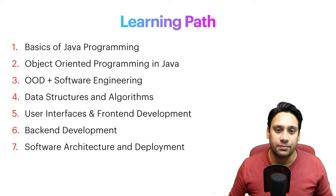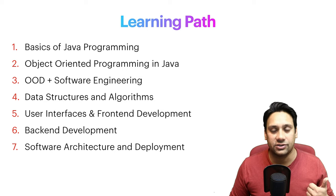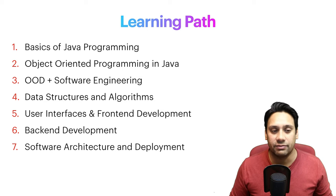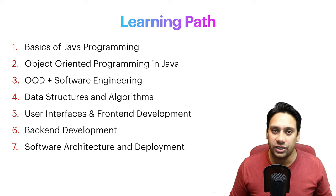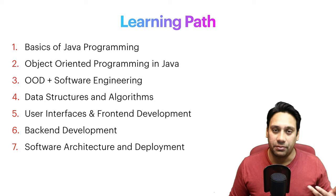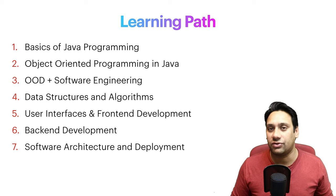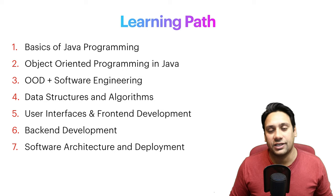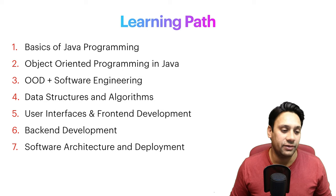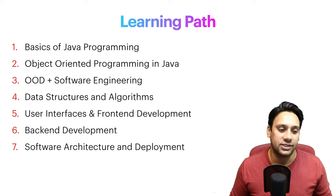There are seven parts. Number one will be the basics of Java programming. The second one will be object-oriented programming in Java. The third one will be software engineering — the background of software engineering. Then you have data structures and algorithms, user interfaces and front-end development. The sixth one will be backend development, and the seventh one will be software architecture and development.